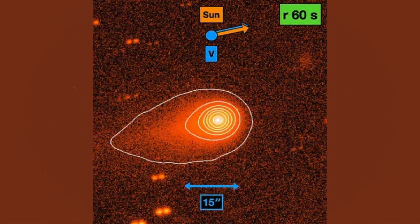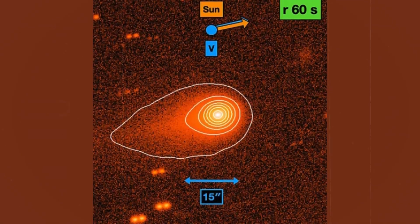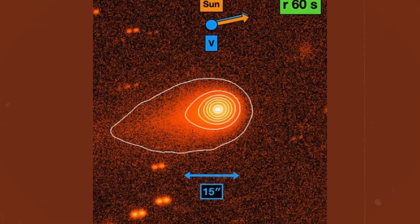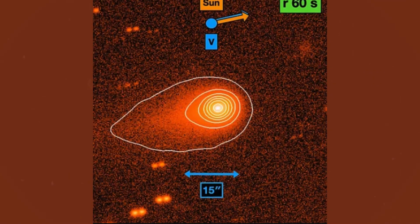Surrounding it is a shroud of gas and dust so immense it already measures nearly 700,000 kilometers across, almost half the size of the sun itself.